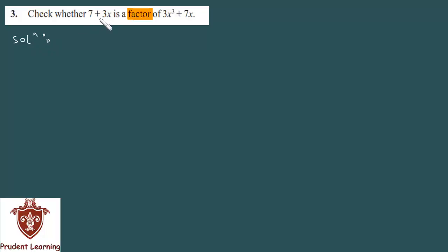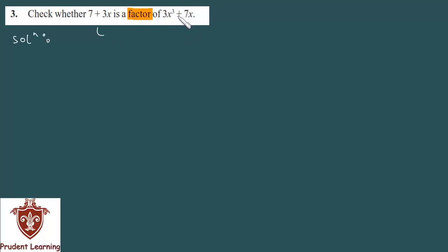7 plus 3x, 3x cube plus 7x का factor तभी हो पाएगा, जब इसका zero निकालें — इसको equate करेंगे 0 से, तो x की value मिलेगी, और वो value जब हम इसमें put करेंगे, तो इसकी value भी finally 0 होनी चाहिए। मैं क्या बोल रहा हूँ वो आपको समझेगा अच्छे से।